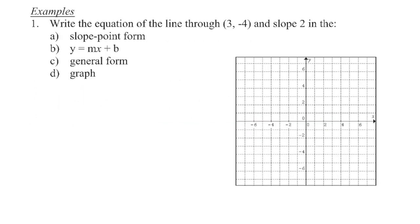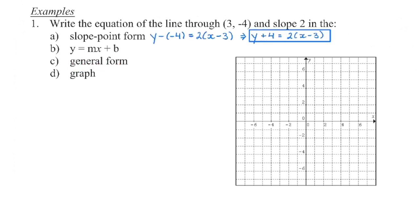Let's put everything together and use all three forms of a linear equation. We always need two pieces of information. In this case, piece 1 is the slope, and piece 2 is a point. Now this point is not a y-intercept, so we cannot begin with slope-intercept form, and we never start with general form. Because of this, slope-point form is the one you're going to begin with most often.